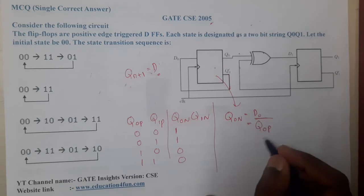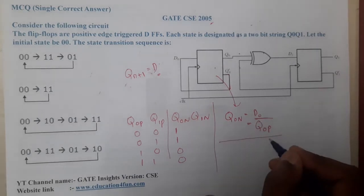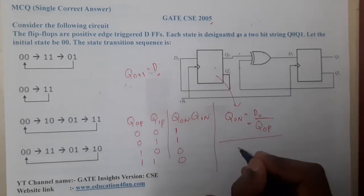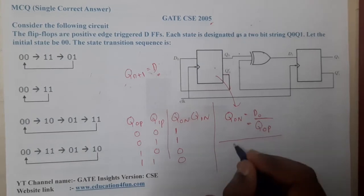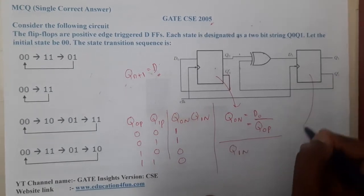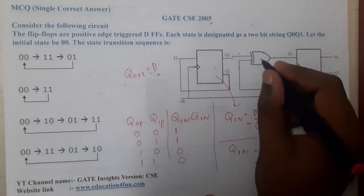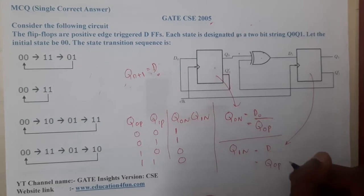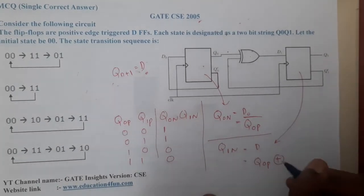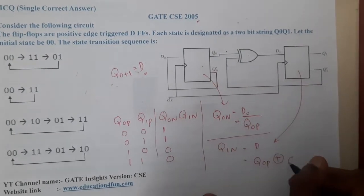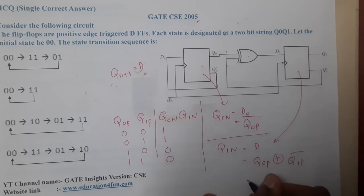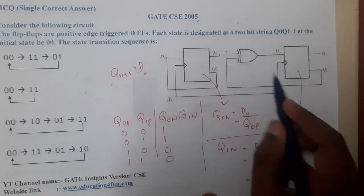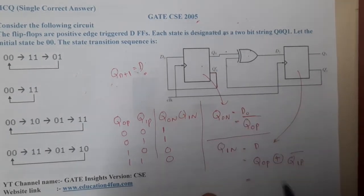Now moving on to the second part, that is Q1 next. Q1 next is nothing but D, so this D is a bit clumsy. It is coming from one input from here and one input from here, and it is being XOR. So it is Q0 present XOR Q1 present complement. Q1 present is complement because it is coming from the complement part, and this is taken directly.